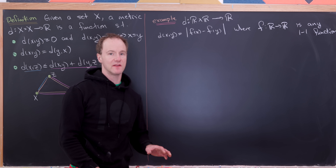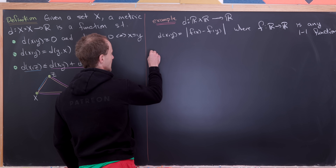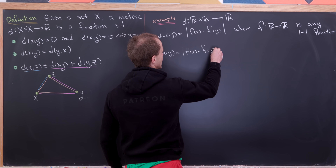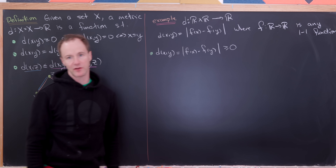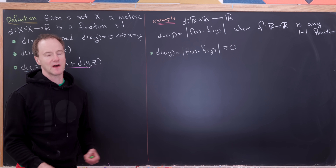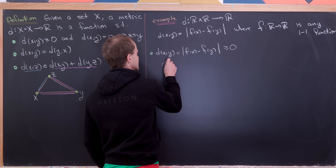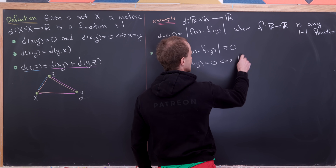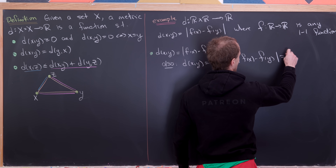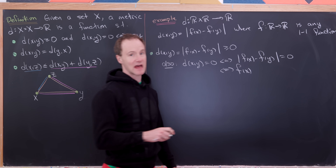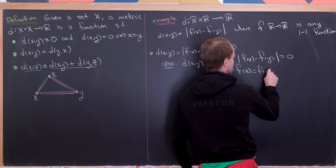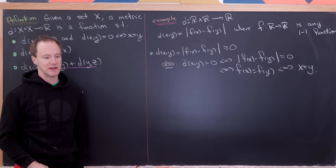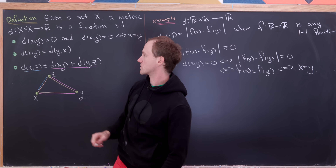Let's check that this satisfies the three conditions. Notice that d(x,y), which equals the absolute value of f(x) minus f(y), is definitely always going to be bigger than or equal to zero, because the absolute value always gives you something non-negative. Now let's suppose d(x,y) equals zero — that's if and only if the absolute value of f(x) minus f(y) equals zero, which is if and only if f(x) equals f(y), which is if and only if x equals y because f is a one-to-one function. So both parts of our first condition are satisfied.